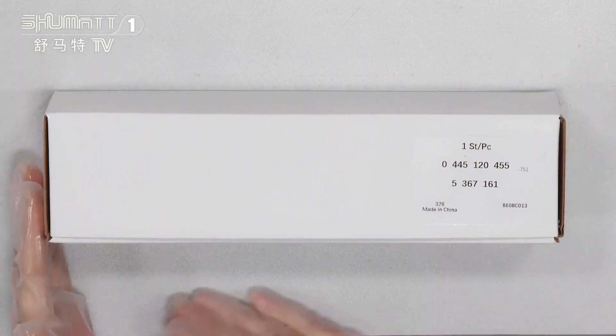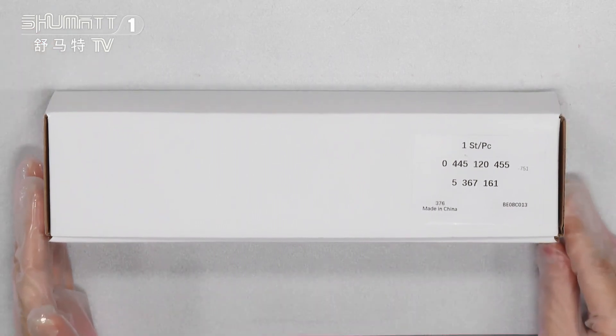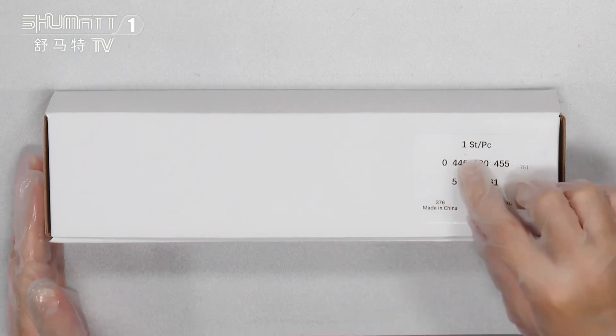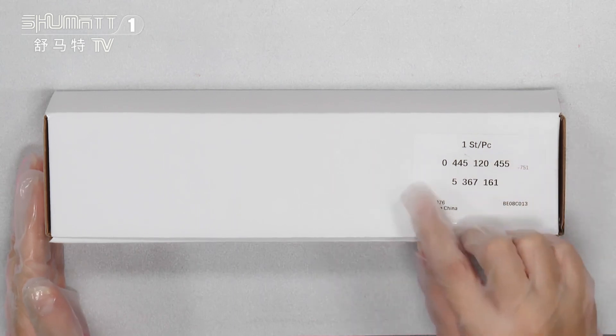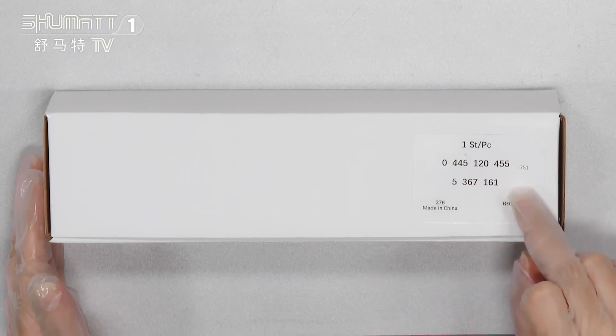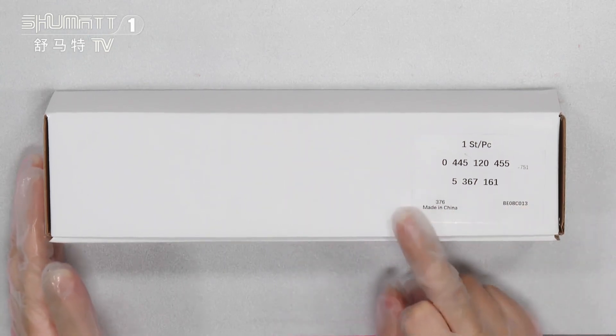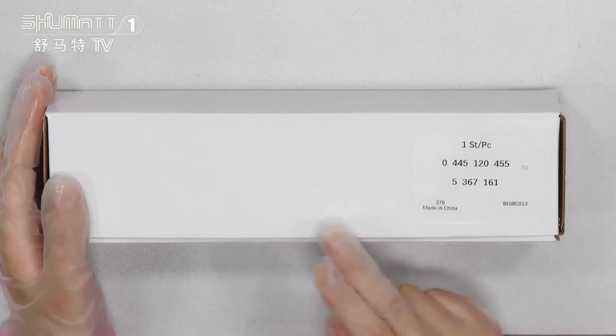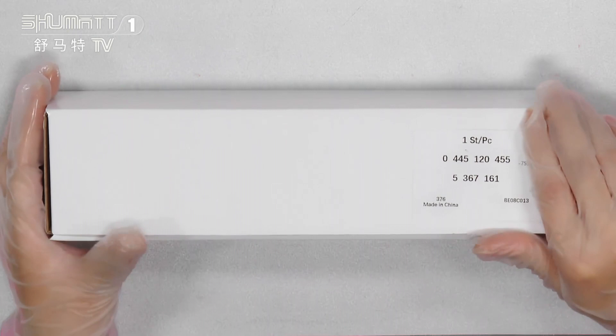You can see the package we packed with the neutral white boxes, and it's with the label on it, the one side of each piece, and the product code is 0445120455. And other information, if you want to print with your own logo, you can contact us, and we can supply you the customized services, the logo label, the packaging bag, and so on.